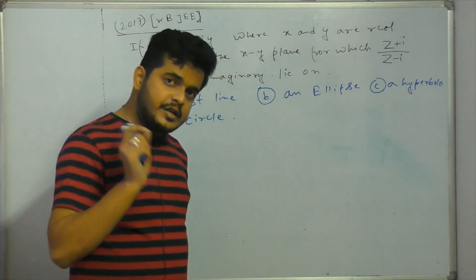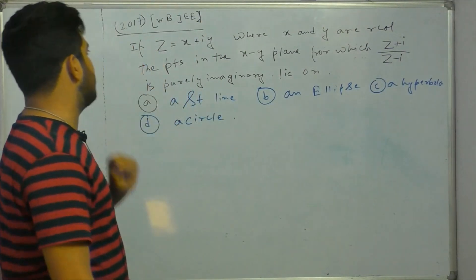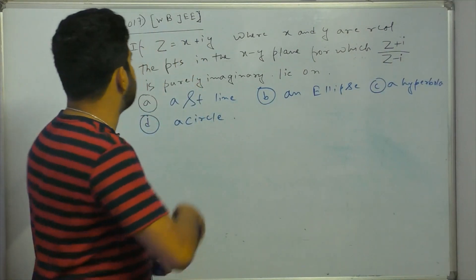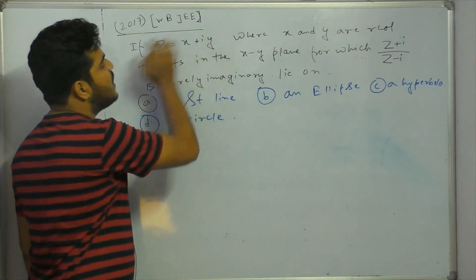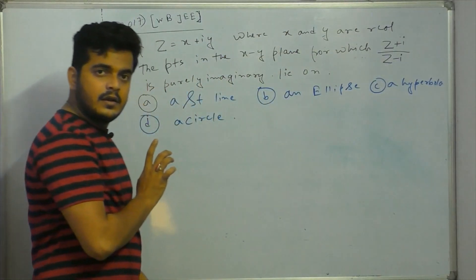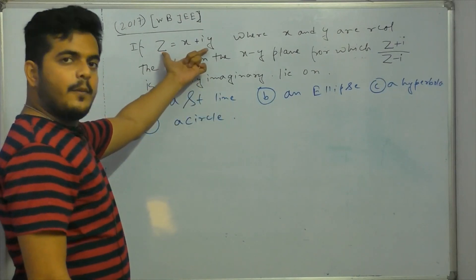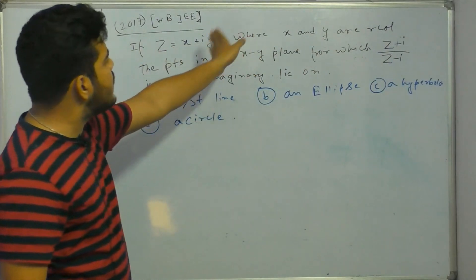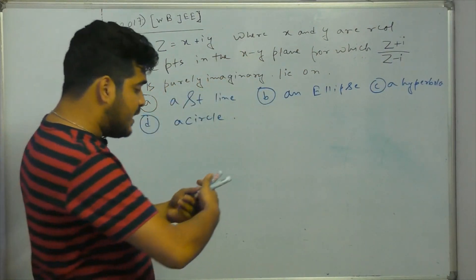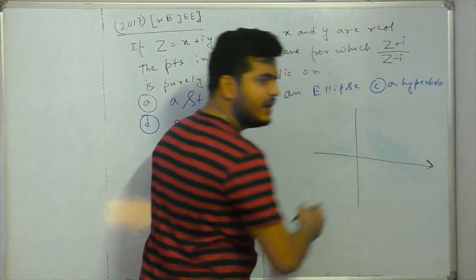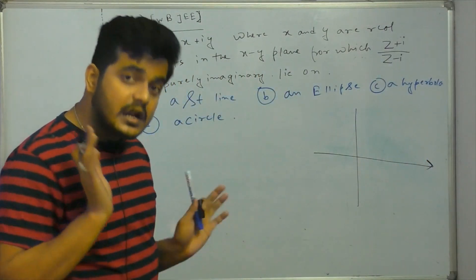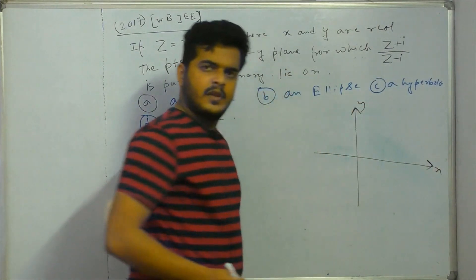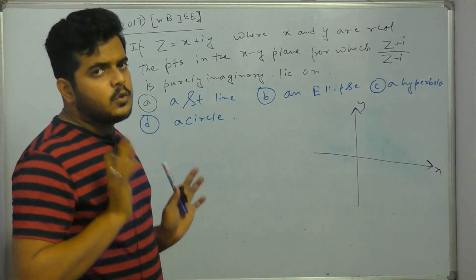West Bengal Joint Entrance — everybody learning. Z equals X plus i, this is the complex of X plus i into Y. To add x and y, the points in the xy plane. The xy plane is a point — which xy plane is a real xy plane, complex xy plane?